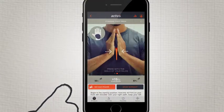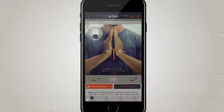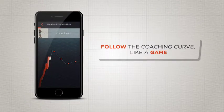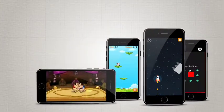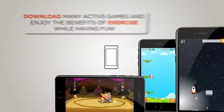The Active 5 mobile app will coach you through each exercise. By adopting the correct pose and applying varying amounts of pressure on Active 5, you'll follow each coaching curve like a game. In fact, you can download many Active 5 games and enjoy the benefits of exercise while having fun.